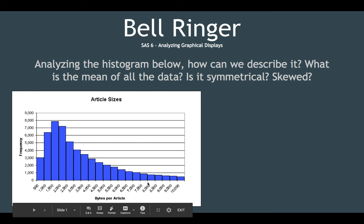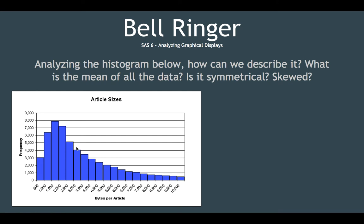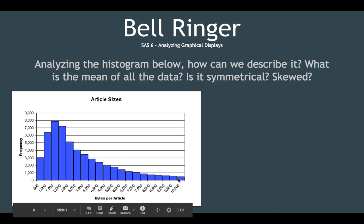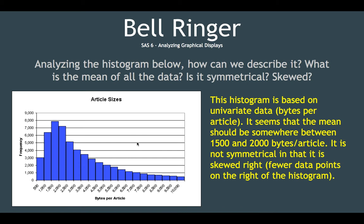As far as being symmetrical — symmetry means that both sides look alike — and obviously this is not symmetrical by any means. This histogram has a whole bunch of skewing to one side. It is skewed far to the right, and that's exactly how it's described.